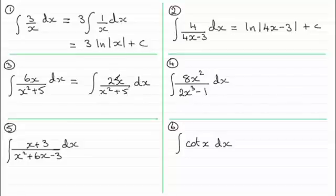But I haven't got a 2 here, I've got a 6. So what I can do is just multiply it by the constant 3. And so what I end up with now is this is equal to 3 times the natural log of the modulus of x squared plus 5, plus a constant of integration c.